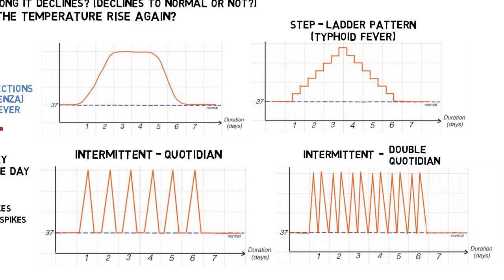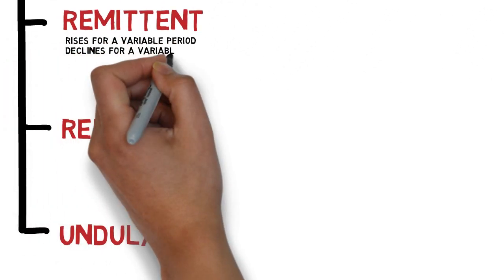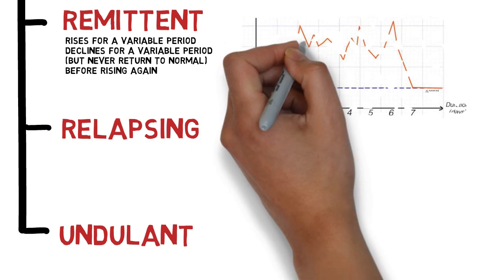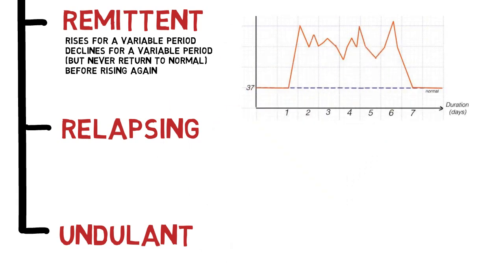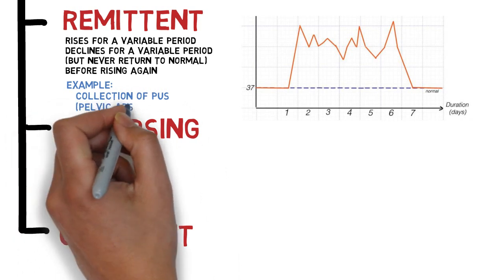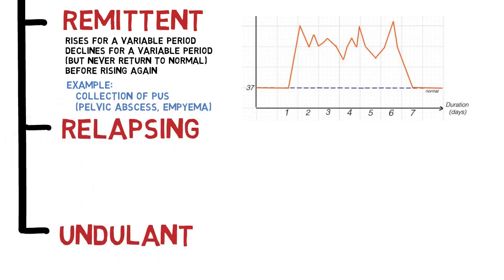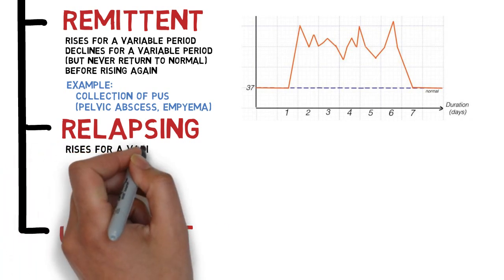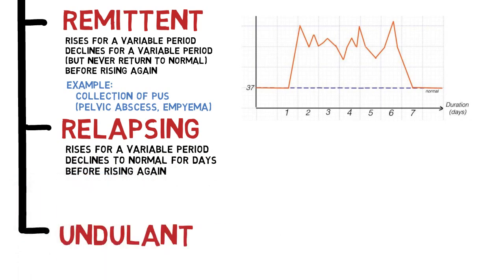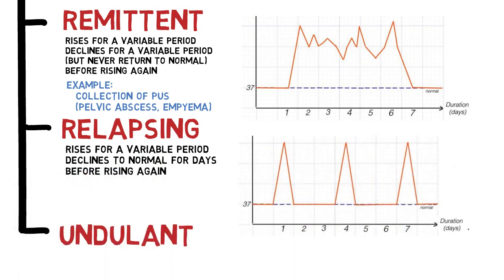The third pattern is remittent fever, almost similar to intermittent fever except that body temperature never actually declines to normal. This is also seen in pyogenic infection, more specifically when there is already pus collection — for example in empyema of the gallbladder or pelvic abscess.